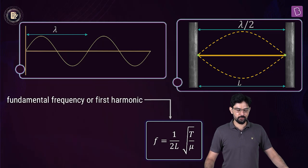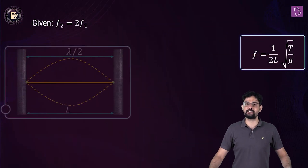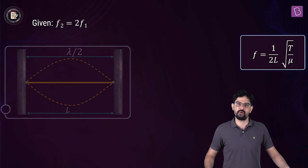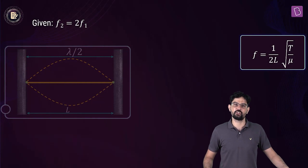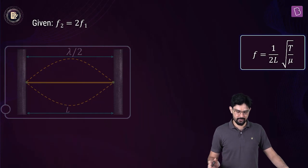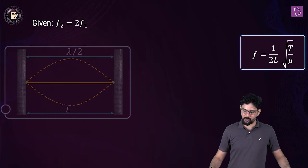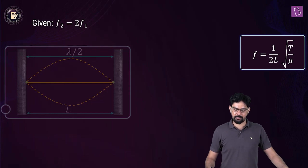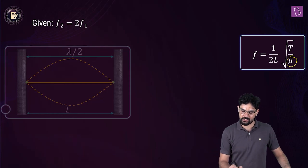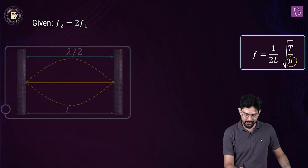Let's assume that the new frequency is f2, which is twice the original frequency f1. Since f = 1/(2L) × √(T/μ) and mu doesn't change, we can say that f is proportional to √(T)/L.